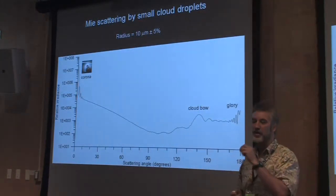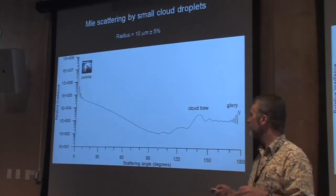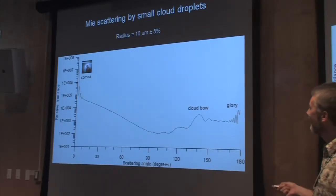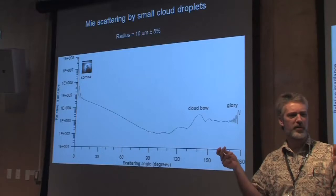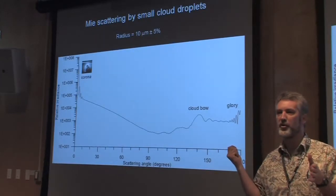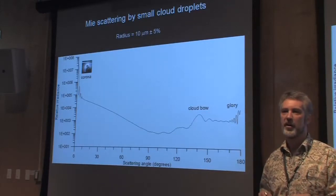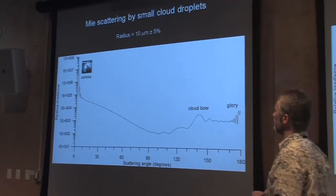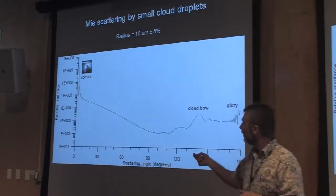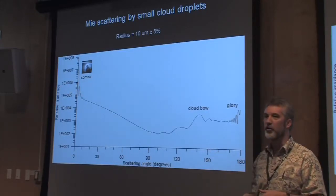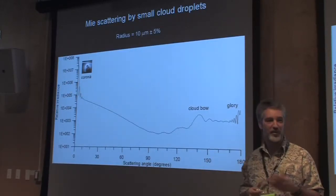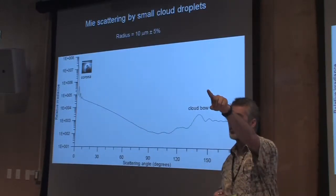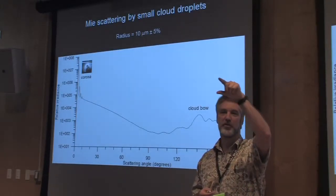If we do this for small cloud droplets instead of raindrops, you get a similar pattern — a cloud bow. The cloud bow is much broader and much smoother, and the colors get washed out because of overlapping orders, so you get a white rainbow. Near zero scattering angle you see the corona — that's the rings around the sun or moon that we talked about.